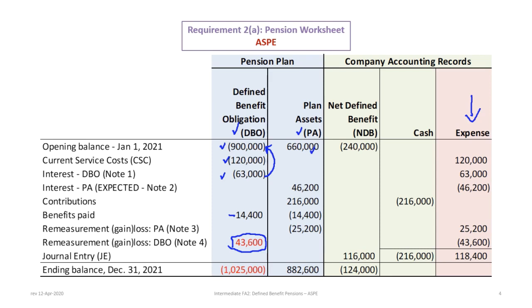We have an opening balance of 660,000. We add the expected return, we add the contributions, we take out the benefits. And in this particular case, there was a remeasurement loss because the actual return was lower than the expected return.